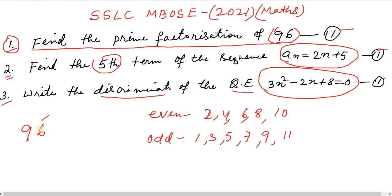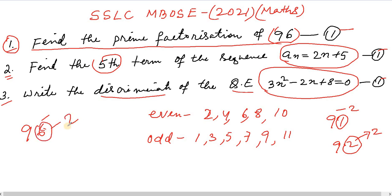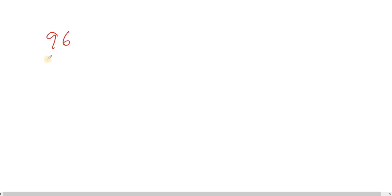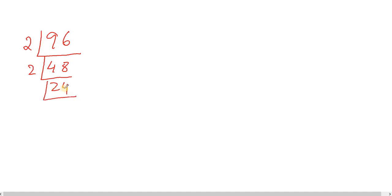Since 96 is an even number, we can divide it by 2. We continue dividing by 2 until we reach an odd number. We keep checking the factors, dividing by 2 repeatedly to find all the prime factors of 96.